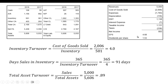Let's look at an example and calculate these. We have an income statement and a balance sheet, and we need both of these to do some of the calculations. For inventory turnover, it's cost of goods sold divided by inventory — cost of goods sold is 2,006 and inventory is 501, so we get about 4. If we want to calculate days sales in inventory, that's 365 divided by inventory turnover, so about 91 days — slightly more than 91 days — meaning you're holding that inventory for about three months.